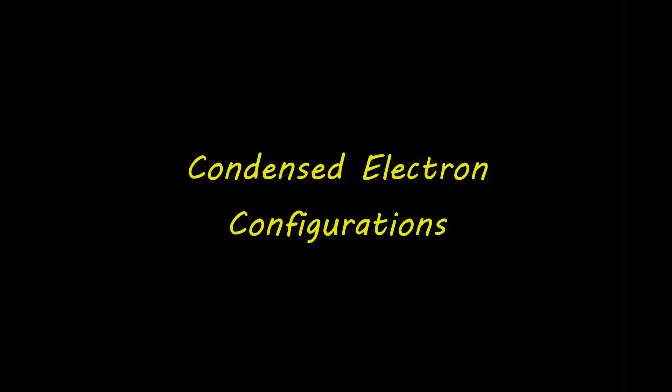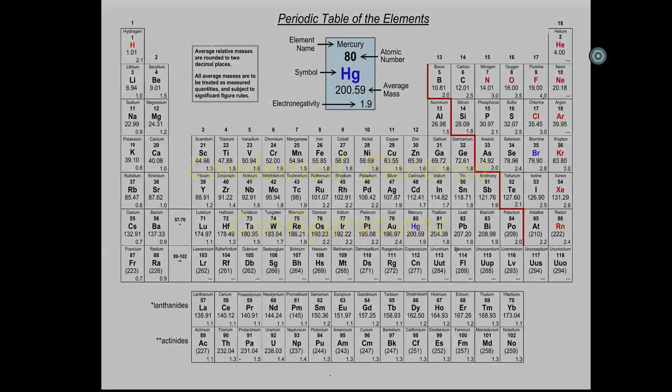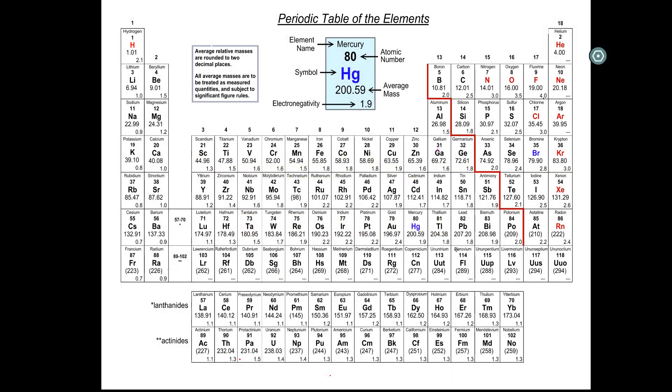All right, so in the last video, we saw that when elements get really large, their electron configurations are long and complicated and easy to make a mistake. So in this video, I'm gonna show you a way that you can come up with a condensed configuration for really any element, but it's most practical and useful if we're dealing with really large elements.